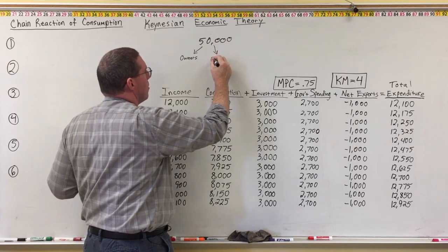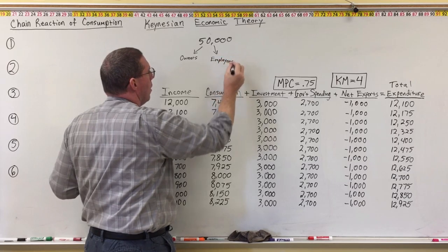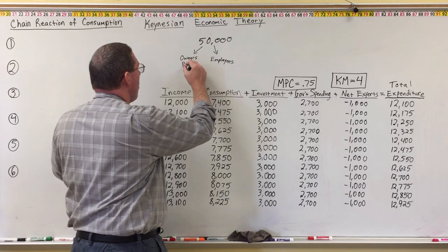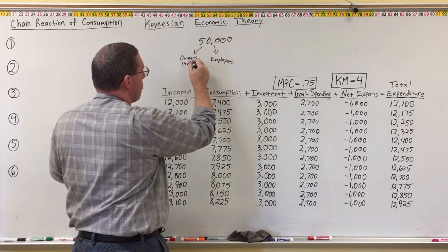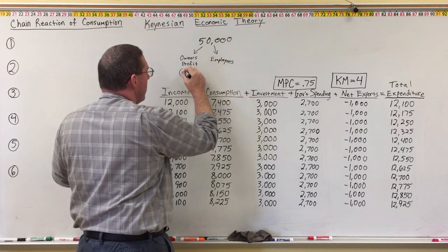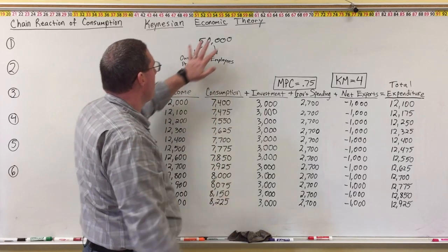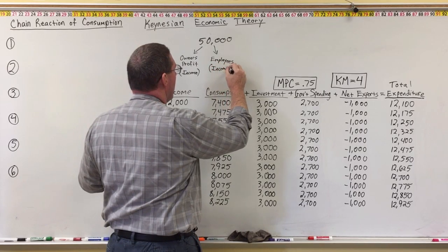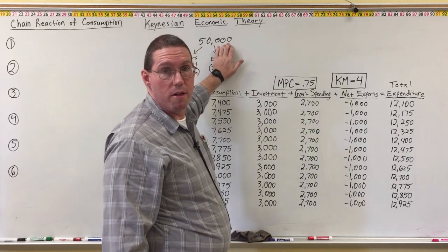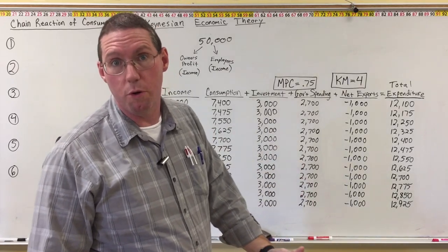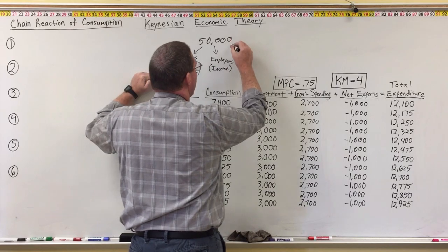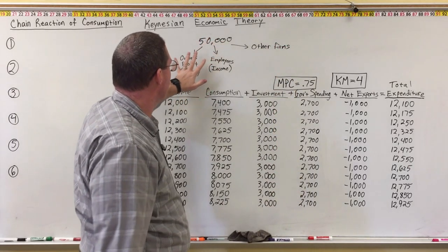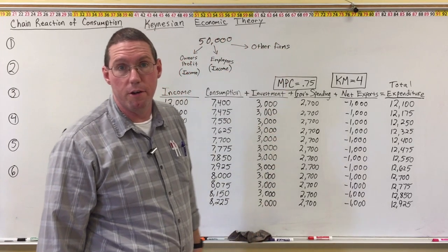The money that goes to Dell: some of that money is going to go to the owners of Dell as profit — and profit for owners is also income. Some of that money is going to go to the employees of Dell — that is also income. And some of the money Dell receives has to be used to buy the parts to make the computers, so some of that money is going to go to other firms.